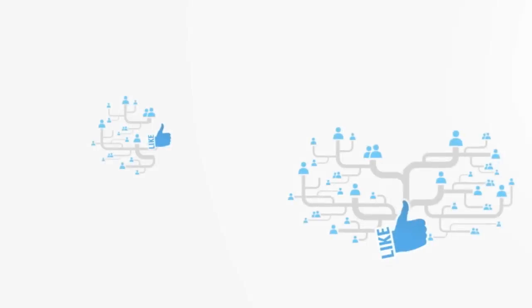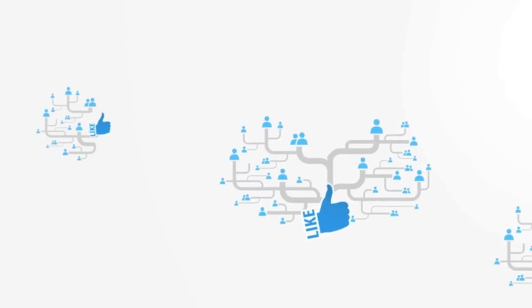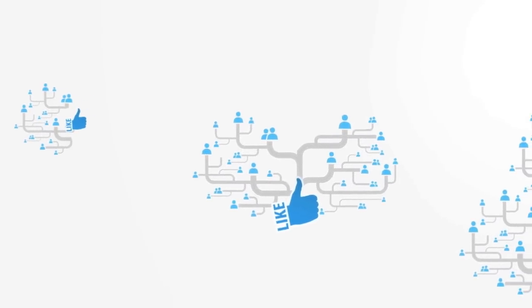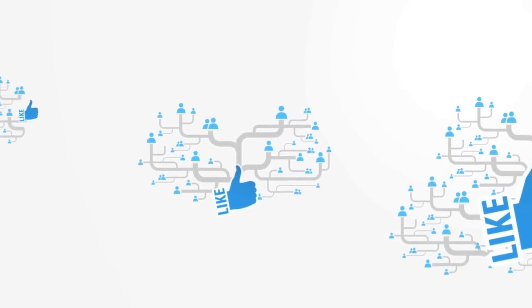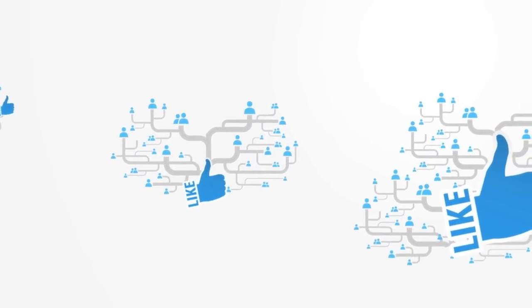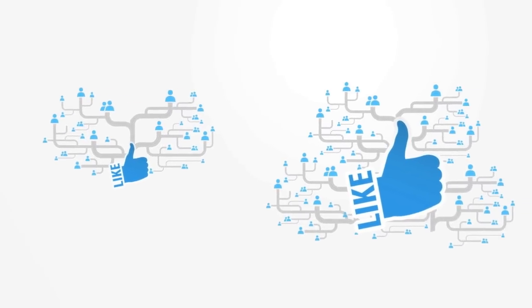Another example of self-organization through positive feedback is what is called the network effect, where the more people that use a product or service, the greater its value becomes. The telephone and Facebook are such examples, becoming more useful as more users join. In this way, local connections between individuals can rapidly form into global patterns.